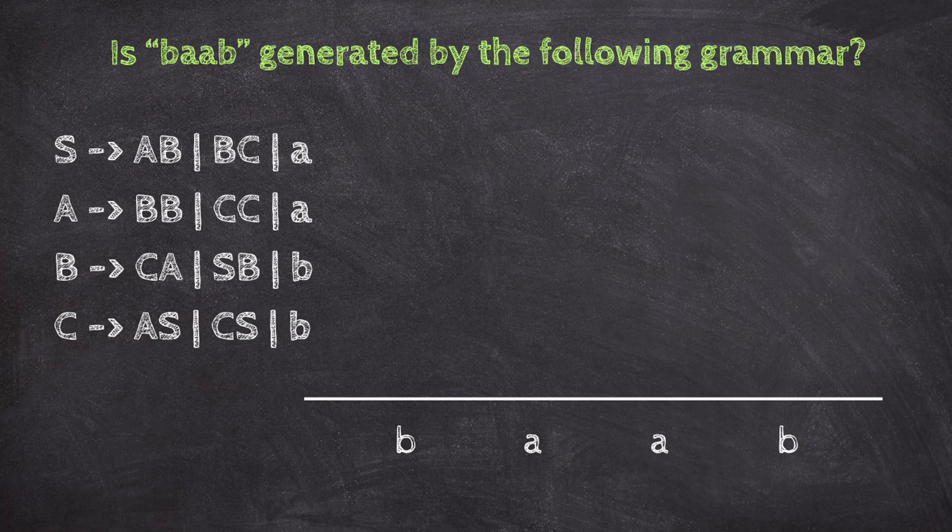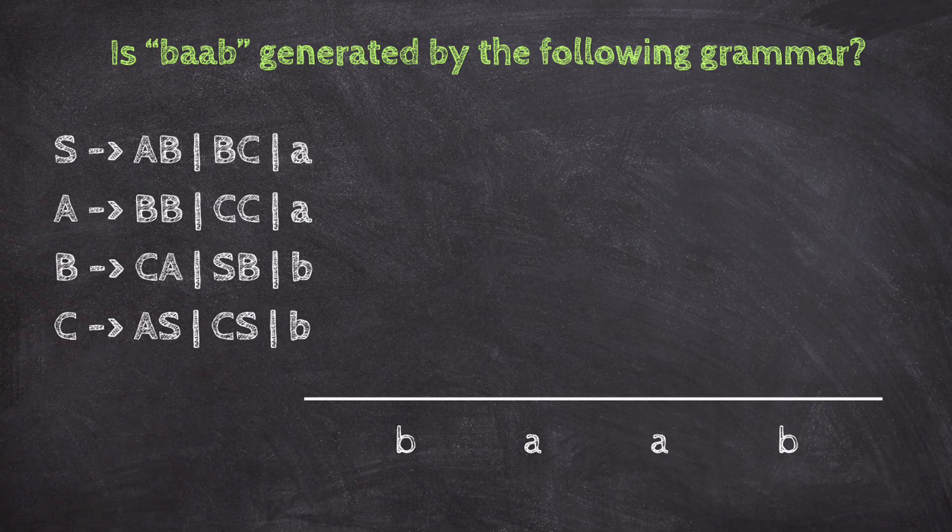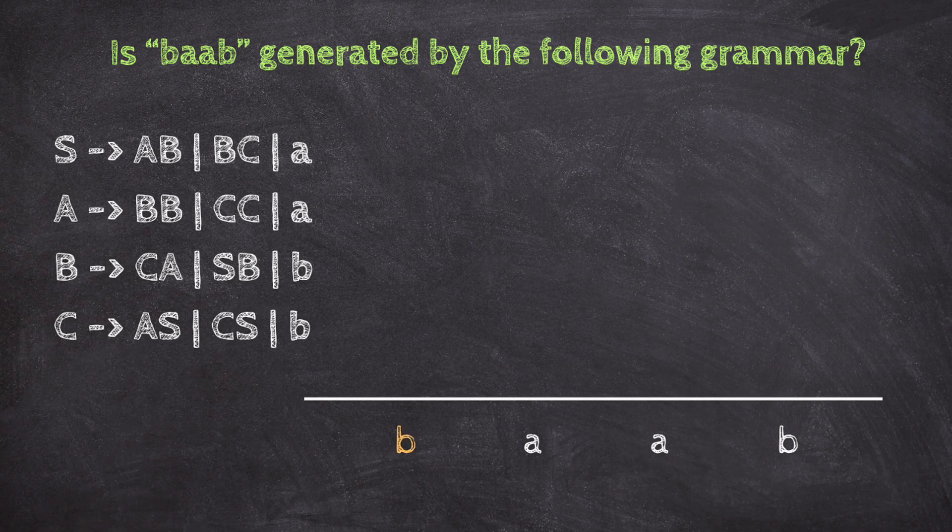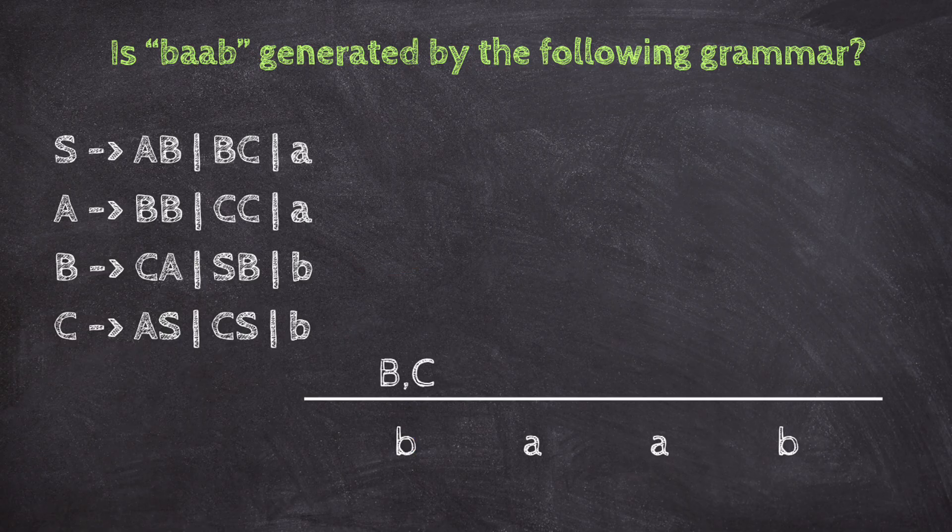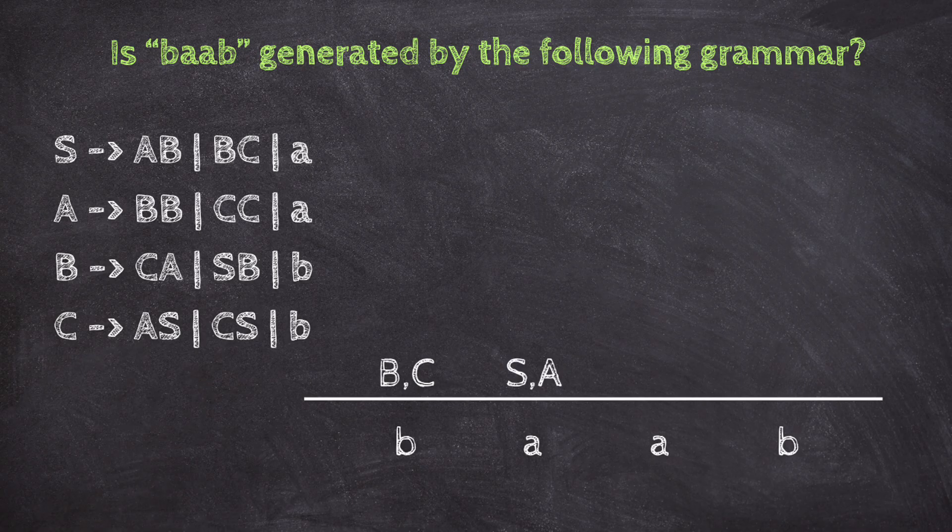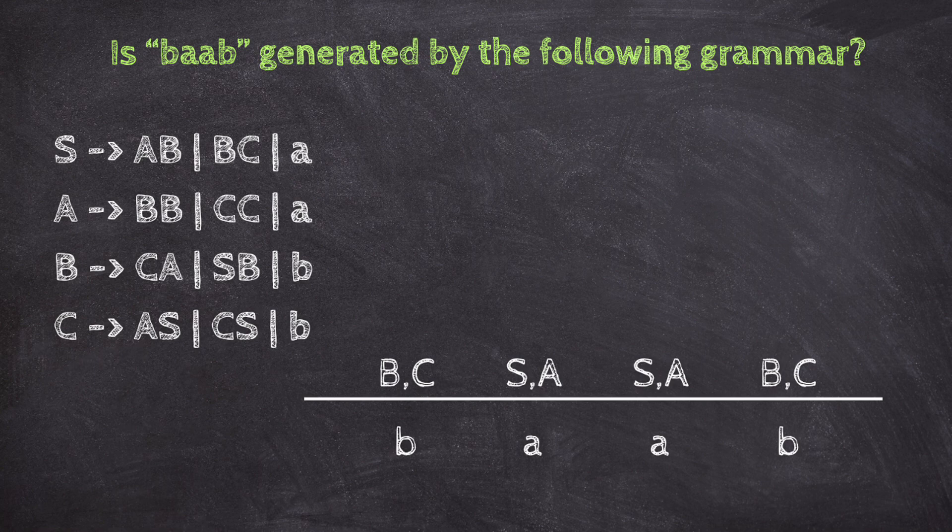First, we write out the string we want to check: BAAB. Now, let's fill in the first row of the CYK table by checking which non-terminals can generate each character. For B, the rules B goes to B and C goes to B, so both B and C can generate B. For A, both S and A can generate A, so we write S and A above each A. So, our first row from left to right is B and C for the first B, S and A for the first A, S and A for the second A, B and C for the last B.